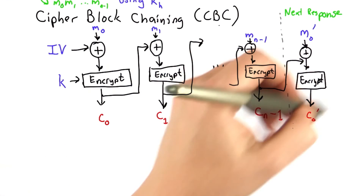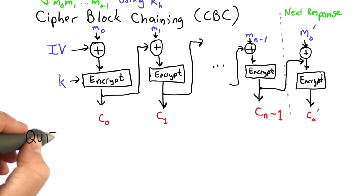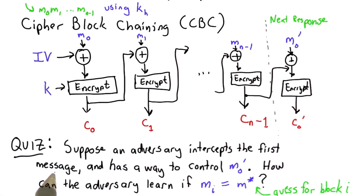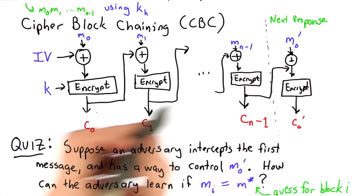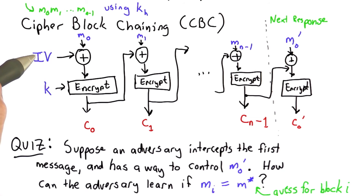But this method does raise an interesting vulnerability. Let's see if you can figure out what it is using a quiz. Suppose an adversary intercepts the first message — the adversary learns all the encrypted blocks but nothing else: not the key K value or the IV value; the handshake worked fine. The question is whether the adversary can learn whether some block is equal to some guess for that block.